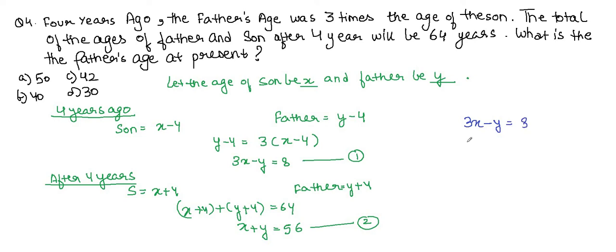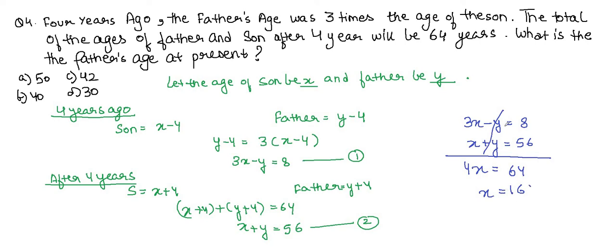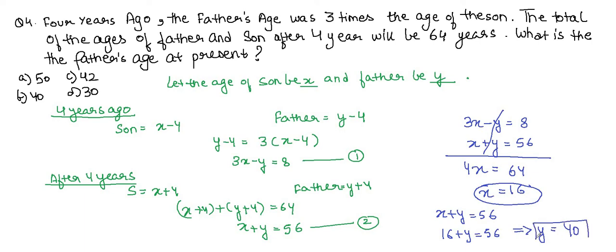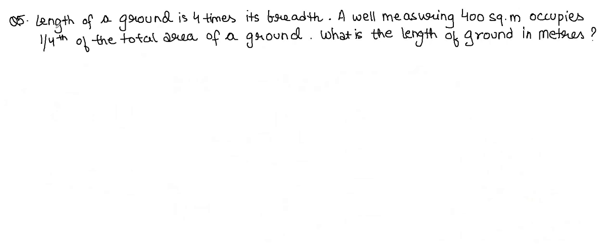Solving equations 1 and 2 simultaneously: 3x − y = 8 and x + y = 56. Adding: 4x = 64, so x = 16. Substituting into x + y = 56: 16 + y = 56, so y = 40. Father's present age is 40 years. The correct answer is B.